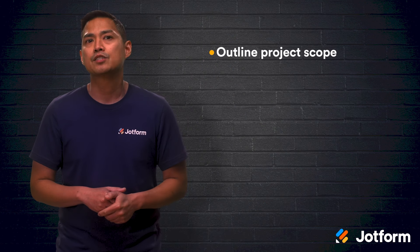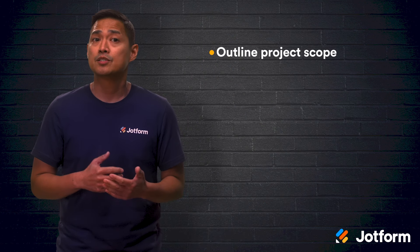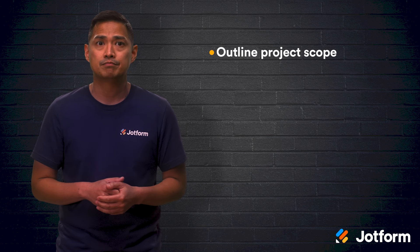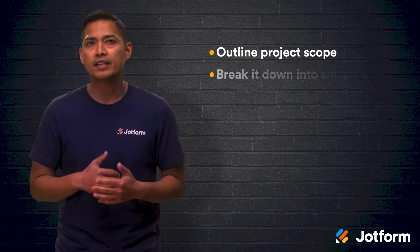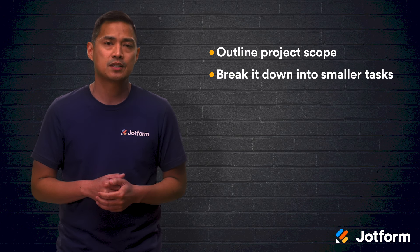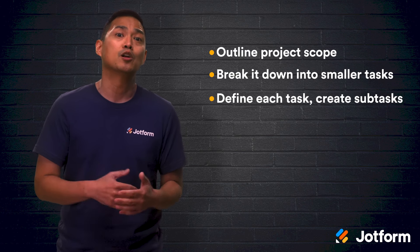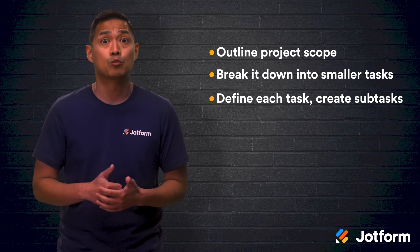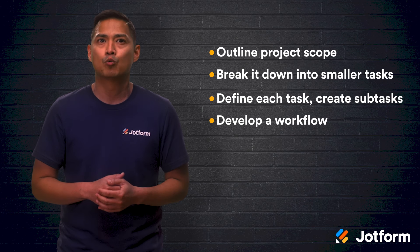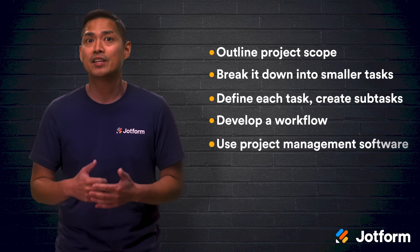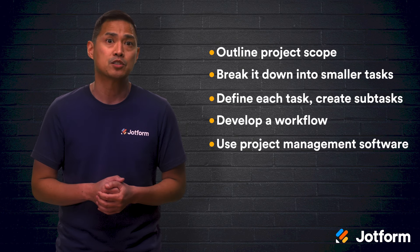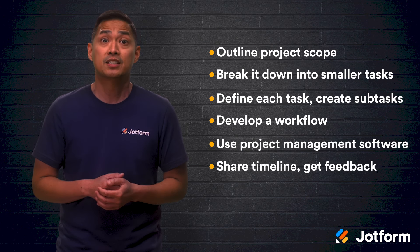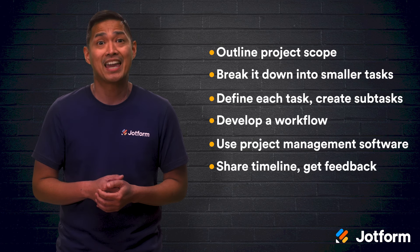Let's do a quick review of the six steps it takes to build a valuable project planning timeline. First, you'll want to outline the scope of your project — this includes the type of project, the due date, and budget. Next, you'll want to break down the project into smaller tasks, and then break those small tasks into even smaller subtasks. This helps you properly sketch the resources required every step of the way. Then you'll want to develop your workflow by creating your timeline, and then enter that timeline into project management software. This way, all your team members can be integral parts of the project every step of the way.